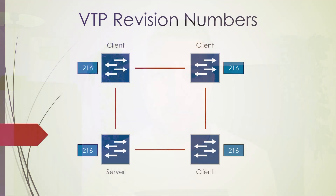Today, we're going to take a look at the configuration numbers used within VTP. As you can see on your screen, we have four VTP switches, one of which is a server. They all have the VTP revision number of 216.